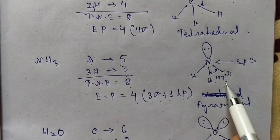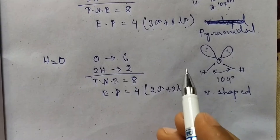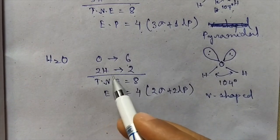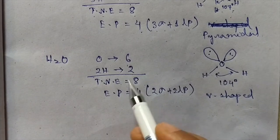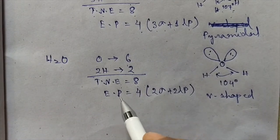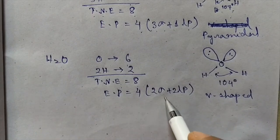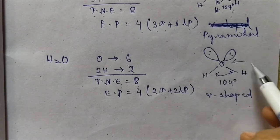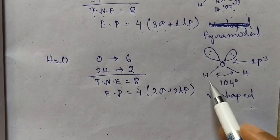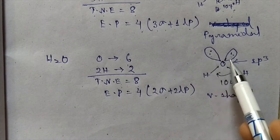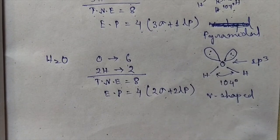In H₂O, oxygen has six valence electrons and two hydrogens have two electrons, so total number of electrons equals eight, electron pairs equal four. For two hydrogens we will have two sigma bonds plus two lone pairs. Here also the hybridization will be sp³ and the structure is called V-shaped. Two of these sp³ hybridized orbitals will be occupied by the two lone pairs.